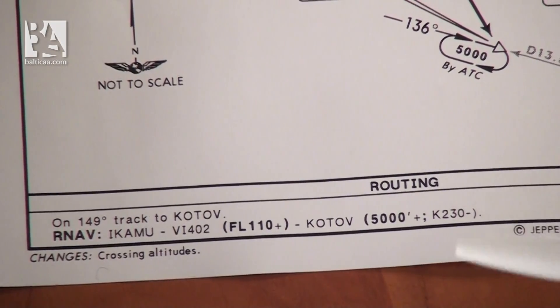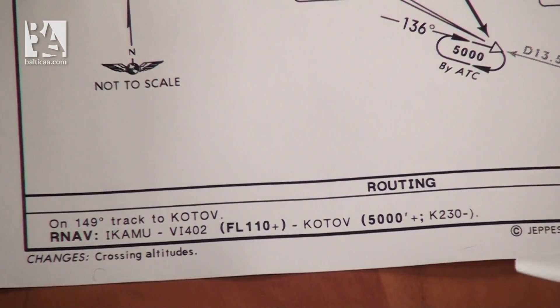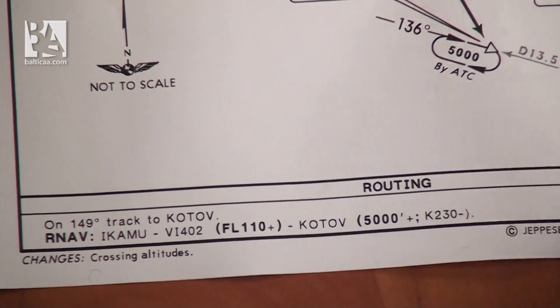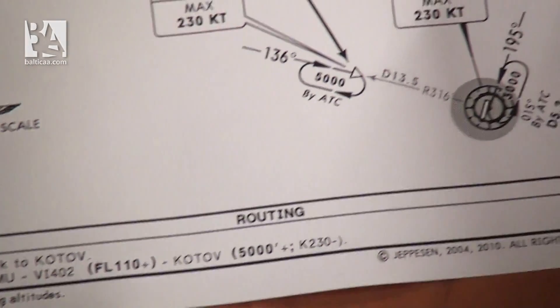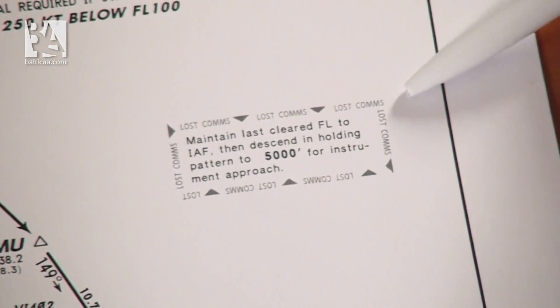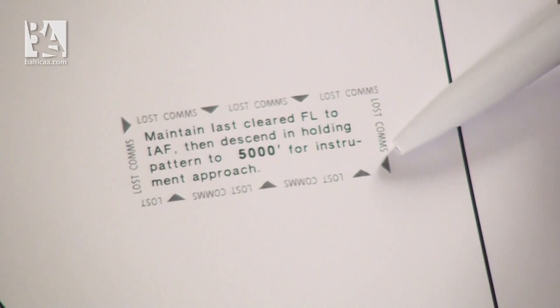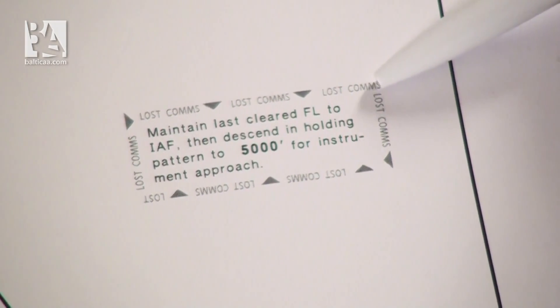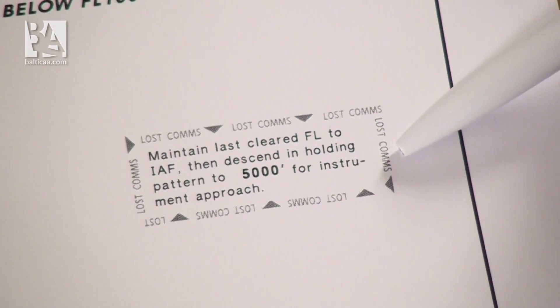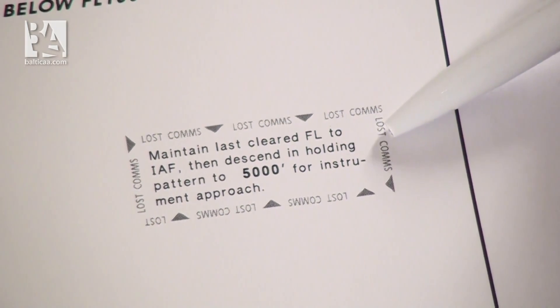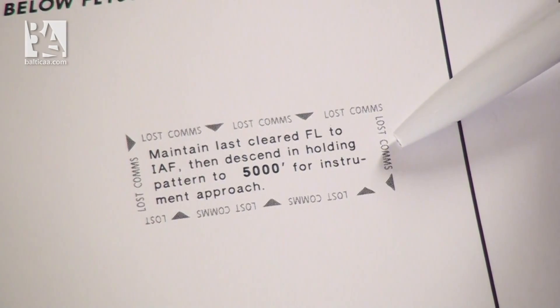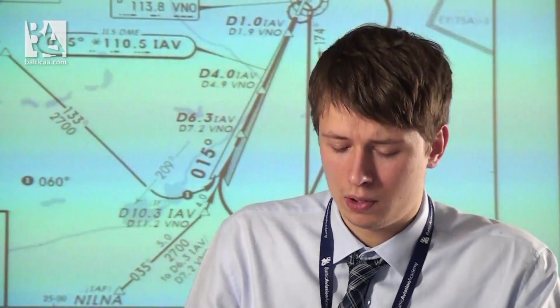Now the last thing on this chart we can mention is the lost communications procedure, which is in this rectangular box. It says: maintain last cleared flight level to initial approach fix, then descend in holding pattern to 5,000 feet for instrument approach. So now let's move on to the landing charts.